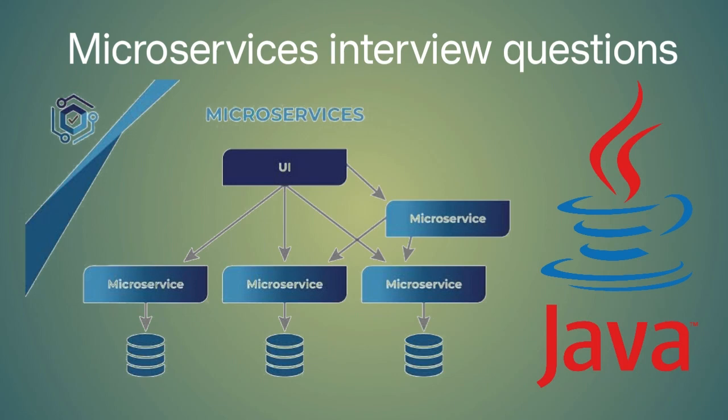What are the typical tools and technologies used in microservices architecture? The typical tools and technologies include containerization platforms like Docker and Kubernetes, service discovery tools like Consul and Zookeeper, message brokers like RabbitMQ and Apache Kafka, API gateways like Kong and Istio, and monitoring and logging tools like Prometheus and ELK Stack.